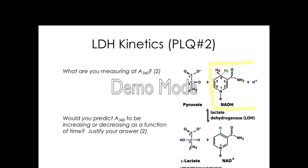NADH, when it's produced, is going to be a nice yellow color. Measuring something at 340 is going to be measuring something that is yellow, so we're actually measuring the concentration of NADH. And would you predict A340 to be increasing or decreasing as a function of time?